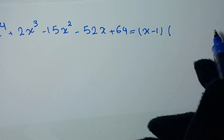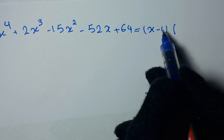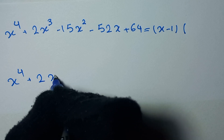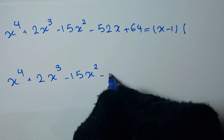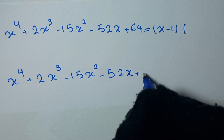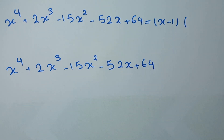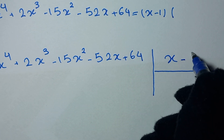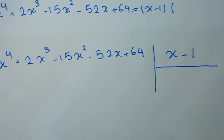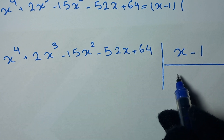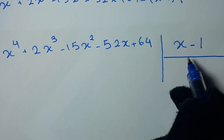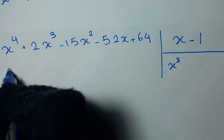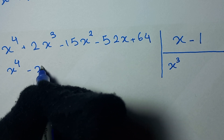So we write x to the power of 4 plus 2x cubed minus 15x squared minus 52x plus 64, divided by x minus 1. We solve this division: x to the power of 4 divided by x gives x cubed. Multiply x minus 1 by x cubed to get x to the power of 4 minus x cubed. Subtracting gives 0, and 2x cubed minus negative x cubed gives 3x cubed.